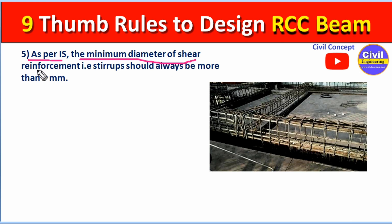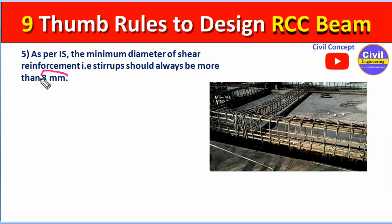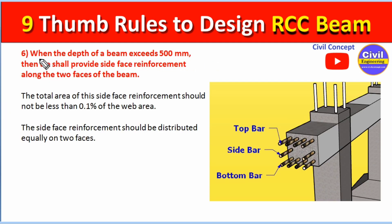Our fifth point: according to IS code, the minimum diameter of the shear reinforcement — i.e., stirrups — should always be more than 8 mm. You can see the vertical rebar members forming the stirrups. We should not use stirrups of less than 8 mm diameter.